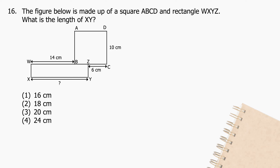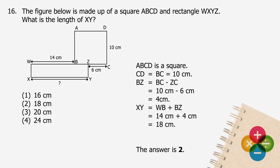Question 16: The figure below is made up of square ABCD and rectangle WXYZ. What is the length of XY? ABCD is a square. Length of CD equals length of BC equals 10 centimeters. Length of BZ will be ZC minus BC, which equals 6 cm minus 10 cm... the difference is 4 centimeters. Length of XY will be WB added to BZ, which equals 14 centimeters plus 4 centimeters, and the sum is 18 centimeters. The answer is 2.